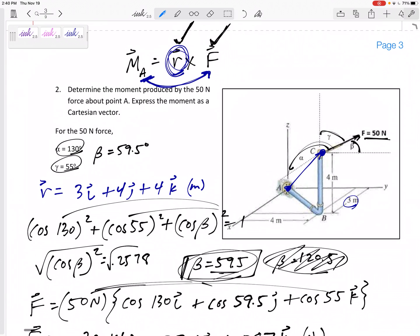Now it might be a moment about a point, it might be a moment about an axis. So the first thing you need to do is read the problem statement carefully. Is this a moment about a point or a moment about an axis?